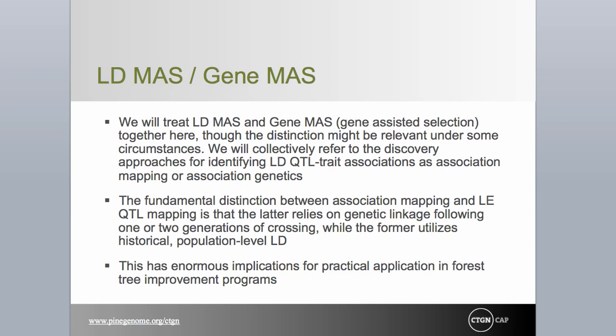Association mapping potentially offers great promise to tree breeders. LD QTL and QTN, once discovered and verified, should have utility in any family or individual tree in a species. In some cases, this association may extend beyond species to closely related genera. Alternatively, the association may fade in distinct subpopulations of the same species. The fundamental distinction between LD or gene MAS and linkage equilibrium MAS is that we are identifying marker-trait associations that identify specific genes or finite genomic regions. However, until tested, the validity of associations must be considered unknown, and we continue to emphasize the need for verification and more sophisticated studies to understand gene action and epistasis.